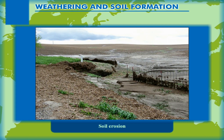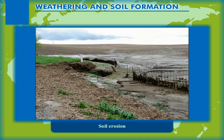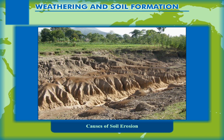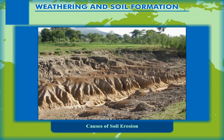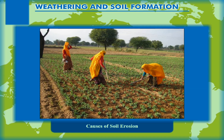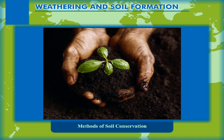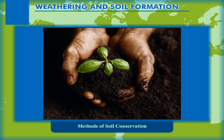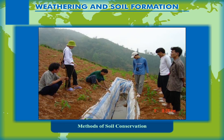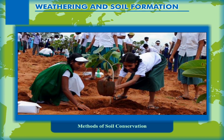Soil Erosion: The topsoil can be carried away easily by wind or washed away by flowing water. This process of carrying away of topsoil by natural forces like water and wind is called soil erosion. Causes of soil erosion include: overgrazing by animals, large scale cutting of trees, deforestation, improper farming practices, heavy rains or floods, and forest fire. Methods of Soil Conservation: Protection of soil from getting destroyed so that it can be used in the future is known as soil conservation. Some measures include growing more trees on a large scale.